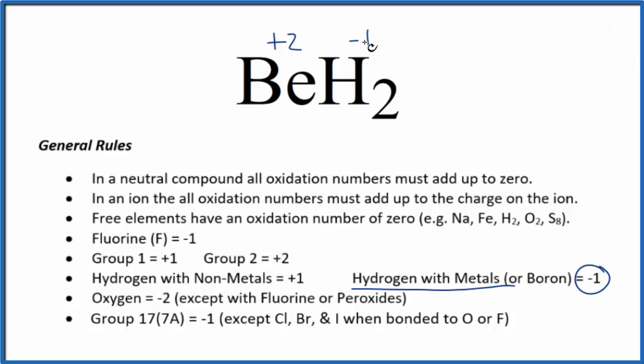And this makes sense. Two times minus one, that gives us minus two. Minus two and plus two, that equals zero.